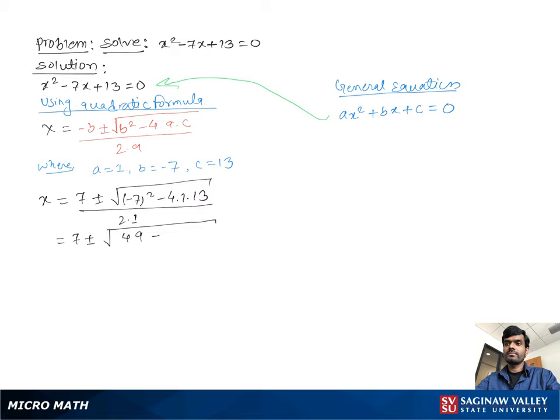Then we have 7 plus or minus the square root of 49 minus 52, all over 2.